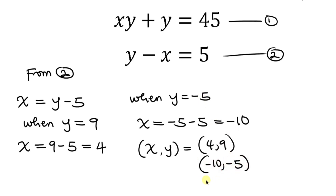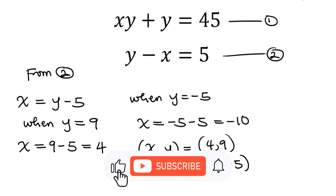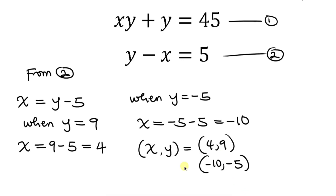So these are the two solutions: when x equals 4, y equals 9; and when x equals negative 10, y equals negative 5. If you have any other method that is shorter or more elegant, you can show that in the comment section below. If you enjoyed this video and learned something, give it a thumbs up, subscribe, and turn on the notification bell so you don't miss upcoming videos. Until next time, take care.